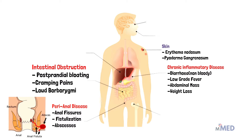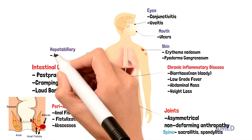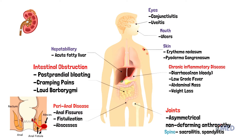Erythema nodosum and pyoderma gangrenosum are very common skin conditions in Crohn's disease. Erythema nodosum presents as painful nodular erythematous rashes usually seen on the shins, caused by circulating immune complexes which generate a reaction in the fat cells under the skin, leading to a classic nodular formation. On histology we can also see non-caseating granulomas. Pyoderma gangrenosum is due to abnormal neutrophils.